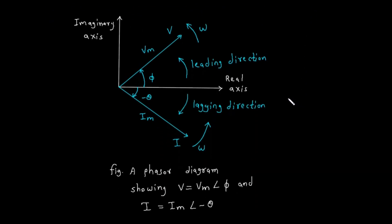Let's look at the final phasor diagram to put it all together. This diagram shows two phasors on the complex plane, one for voltage V and one for current I. The voltage phasor V has a magnitude of Vm and makes a positive angle phi with the real axis, so in polar form we write V equals Vm at an angle of phi — meaning the voltage is leading the reference by angle phi. The current phasor I has a magnitude of Im and makes a negative angle, negative theta, with the real axis, so in polar form we write I equals Im at an angle of negative theta — meaning the current is lagging the reference by angle theta. The curved arrows show the leading direction is counterclockwise and the lagging direction is clockwise, reinforcing what we learned earlier.